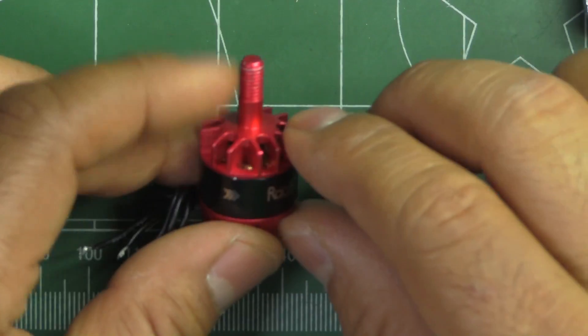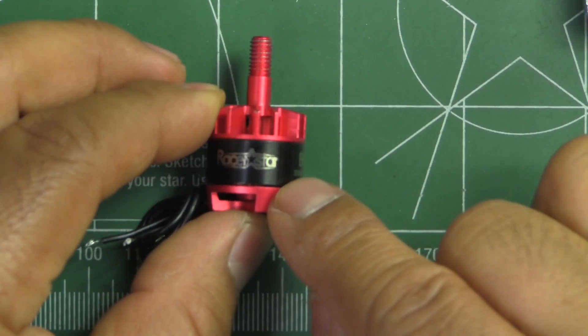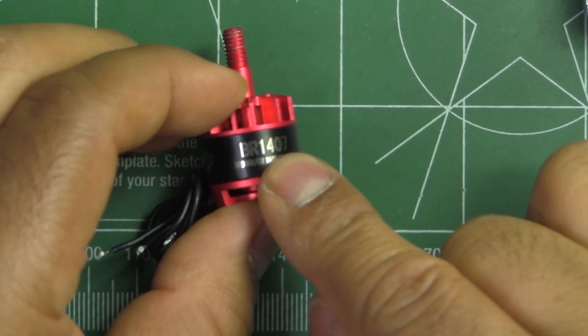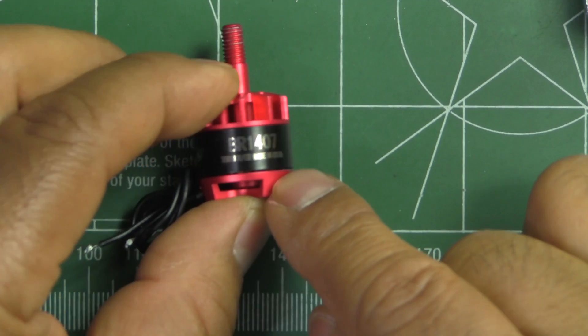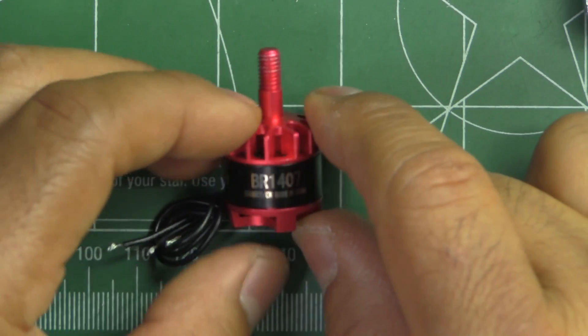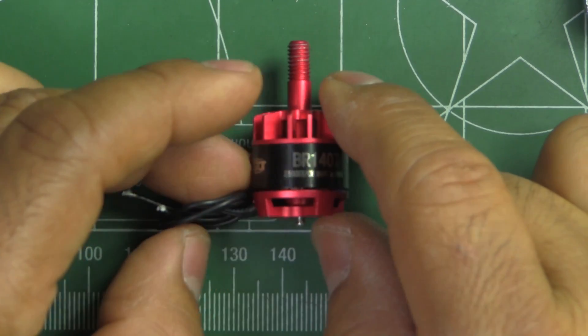Okay, so that's the overview of this motor. BR 1407 3500 KV. Now let's see how it does on the thrust stand, and we can do some comparisons with the other 1407s.